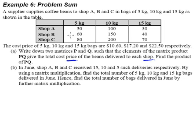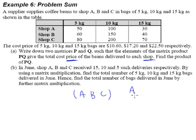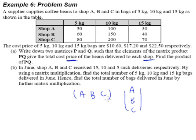We have three shops, which means that our final answer will be three numbers. So we end up with either a 1 by 3 matrix [A, B, C] or a 3 by 1 matrix. A will give us the total price for the beans delivered to shop A, B will give the total for shop B, and so on. So we know we are expecting an answer of three different numbers.